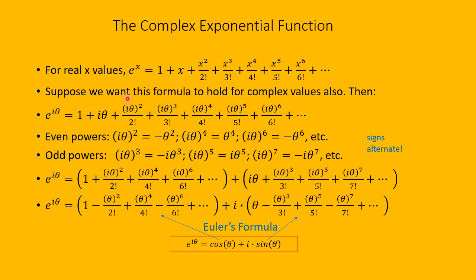Now let's look at the even powers. i theta squared is the same as i squared theta squared, but i squared is minus 1, so this equals minus theta squared. i theta raised to the 4th power: i to the 4th is i squared times i squared, which is minus 1 times minus 1, which is plus 1. So i theta to the 4th is just theta to the 4th. Similarly, i theta to the 6th power is minus theta to the 6th, and so forth. The signs in front of these powers of theta alternate.